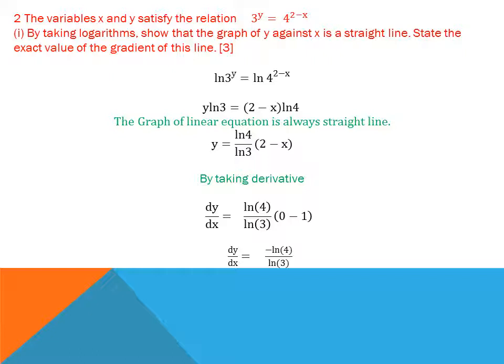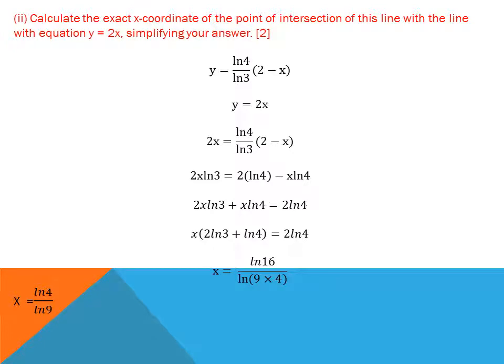So Y equals (ln 4 / ln 3) into (2 − X). For the second part, find the exact value of the gradient. The gradient dY/dX equals −ln 4 / ln 3 — the ln 4 / ln 3 is constant, derivative of 2 is 0, and derivative of X is −1. Do not use a calculator; the exact value is −ln 4 / ln 3. The third part asks for the X-coordinate where this line meets Y = 2X.